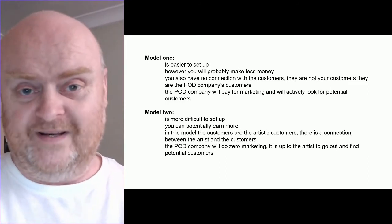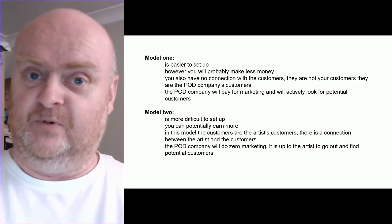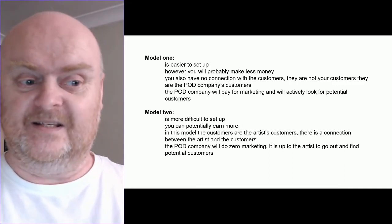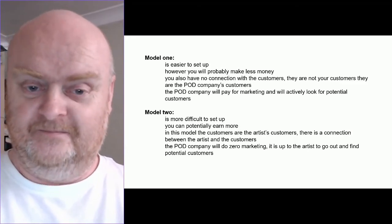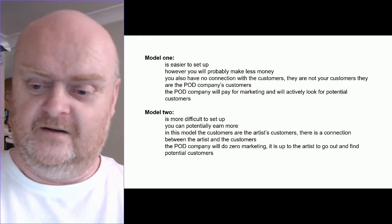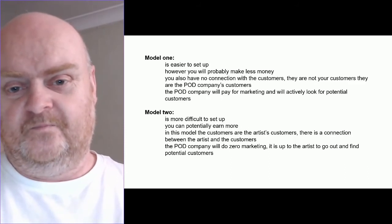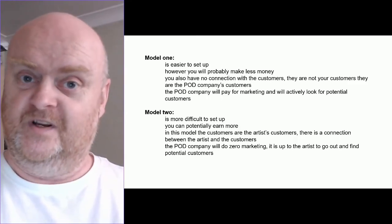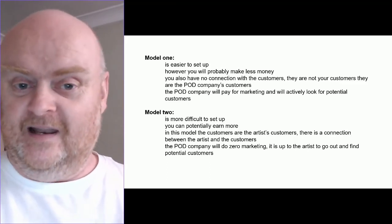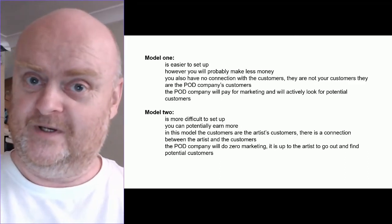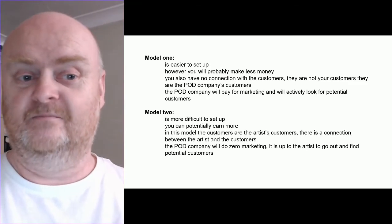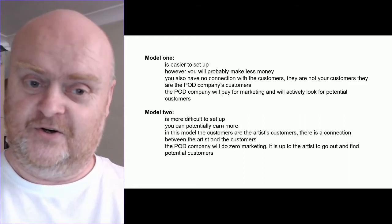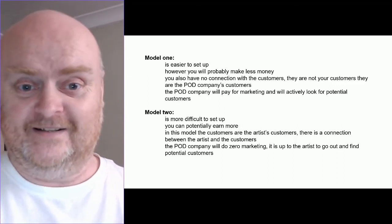To sum up the pros and cons of each model: Model one is easier to set up — just create designs and upload them. However, you'll probably make less money. With Redbubble, for example, selling a t-shirt might earn you only two or three dollars before tax. Redbubble also has a minimum withdrawal threshold of 20 — whether that's dollars, euros, or pounds. If you're only selling stickers and the occasional t-shirt, it could take months before you can withdraw any earnings.